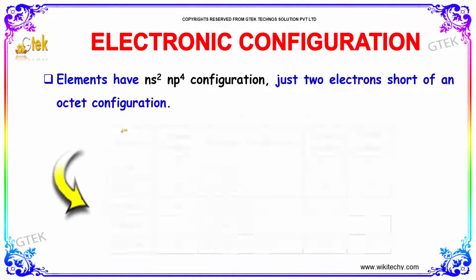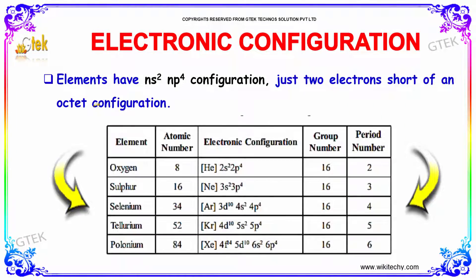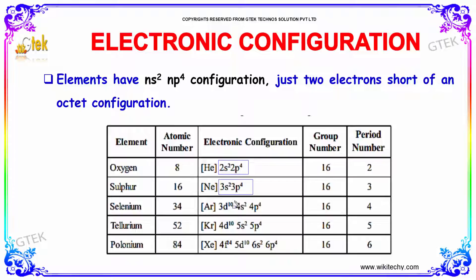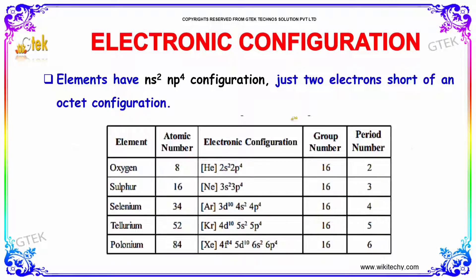Talking about the electronic configuration, it has a general configuration of NS2 NP4. Here are the elements with their period number, group number, and atomic number visible — they are just two electrons short of an octet configuration.